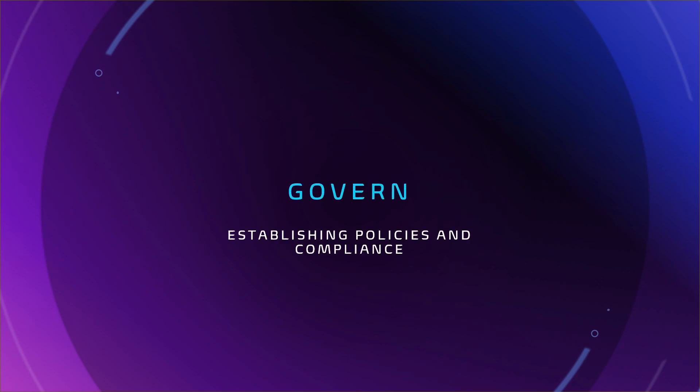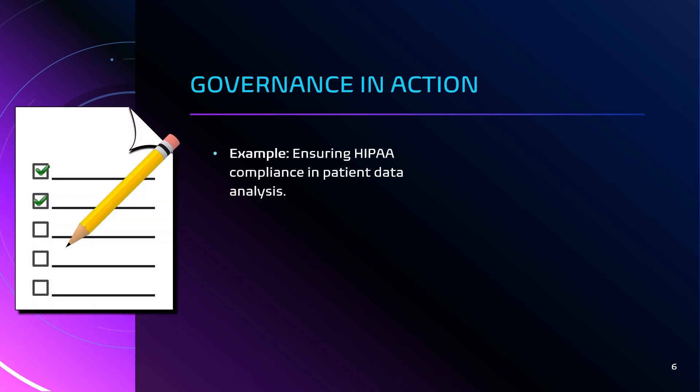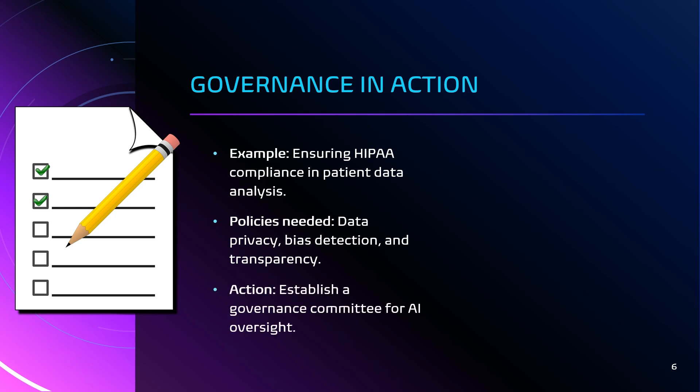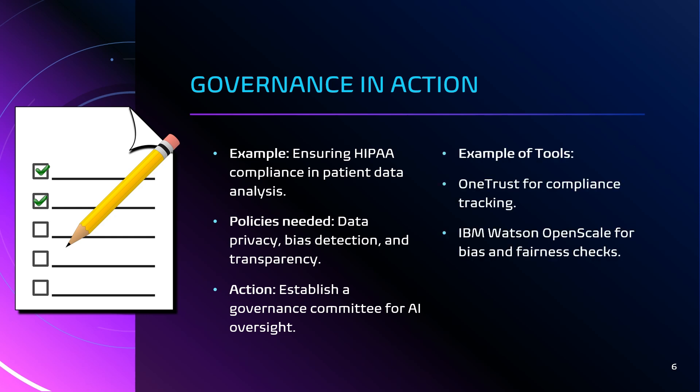Going through what it means to govern in this domain: governance in action means, for example, ensuring compliance with HIPAA for patient data analysis. Policies needed include a data privacy policy, a bias detection policy, and a transparency policy. Actions include establishing a governance committee for AI oversight. Example tools include OneTrust for compliance tracking and IBM Watson OpenScale for bias and fairness checks.